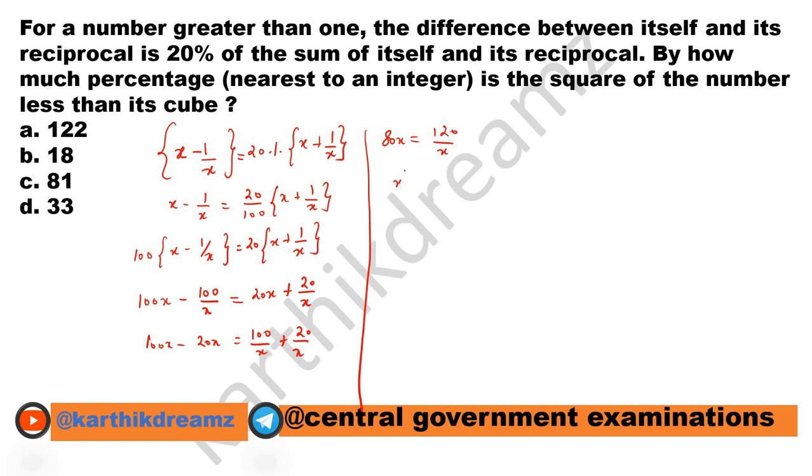And x comes over here, 80 goes there. 80 x square equals 120. So this gets cancelled which is nothing but 3 by 2. And x equals root of 3 by 2.